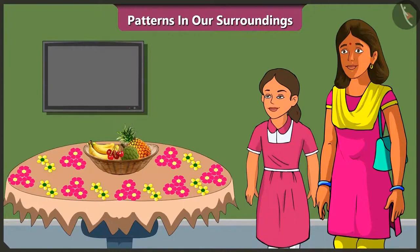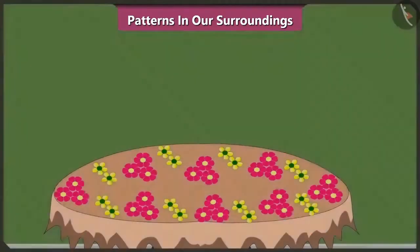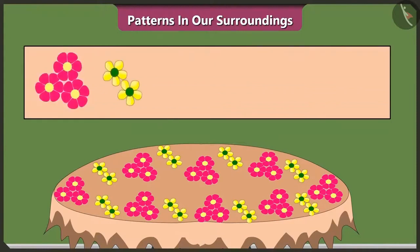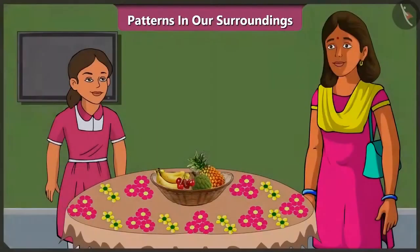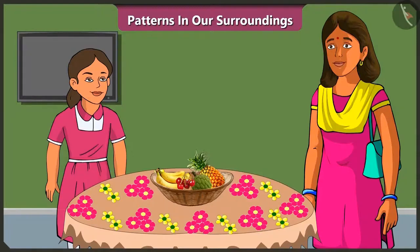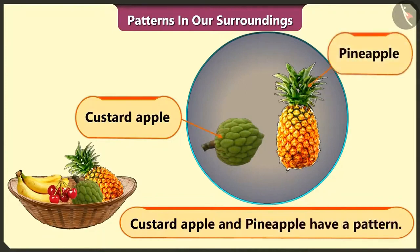Mummy, our tablecloth also has a pattern. Did you notice? Vinny, what is the pattern of this cloth? It has three flowers, then two flowers, then again three flowers, two flowers, three flowers, two flowers — it gets repeated and that's how this pattern is created. Well done, Vinny. Now, can you tell which of the fruits on the table have a pattern? There is a pattern in custard apple and pineapple.